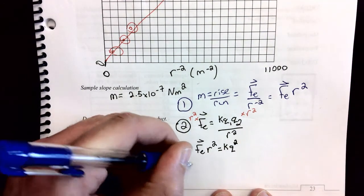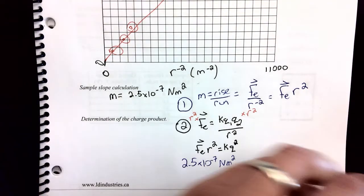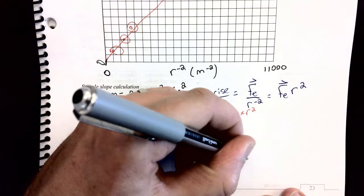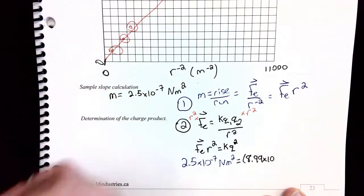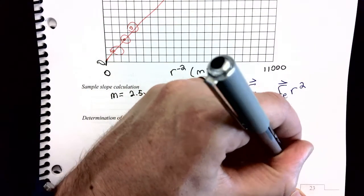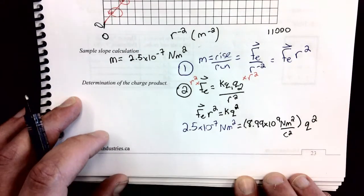So I can put in place of electric force times r squared the slope of my graph, which was 2.5 times 10 to the negative 7 newton meters squared. That equals k, which is Coulomb's constant, or the electrostatic constant, 8.99 times 10 to the 9 newton meters squared per Coulomb squared, multiplied by the unknown charge that I'm looking for, squared.